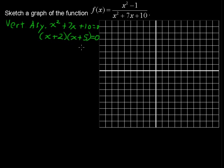Solving this you have x plus 2 equals 0 or x plus 5 equals 0. So we get x equals negative 2 and x equals negative 5.